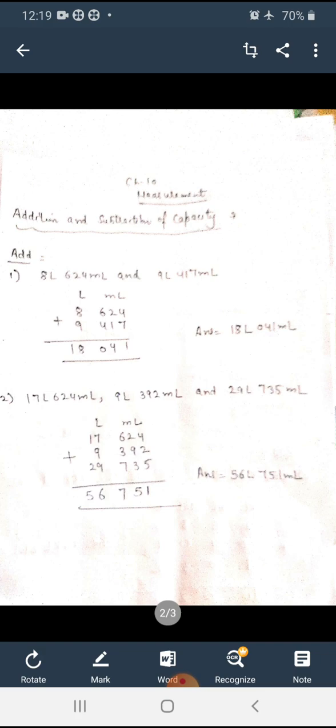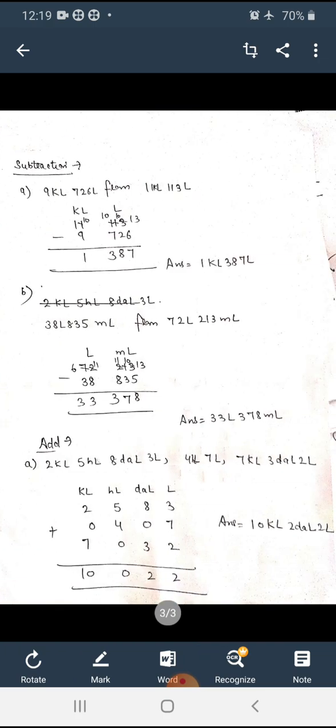Next is subtraction: 9 kiloliter 726 liter from 11 kiloliter 113 liter. So you have to subtract the first number from the second number. Two units are there: kiloliter and liter. From 11 kiloliter and 113 liter, minus 9 kiloliter 726 liter. So you have to subtract in the same way as we have done earlier. Same is with the second question, third question.